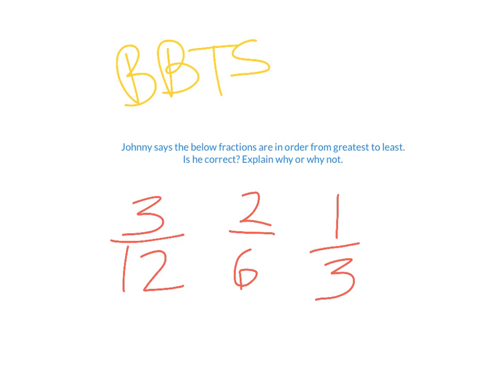Here's a bring back to school. Johnny says the below fractions are in order from greatest to least, because he sees three, two, one. And, then, twelve, six, three. Is he correct? Explain why or why not. So, you'll need to have some work to defend or say he's wrong.